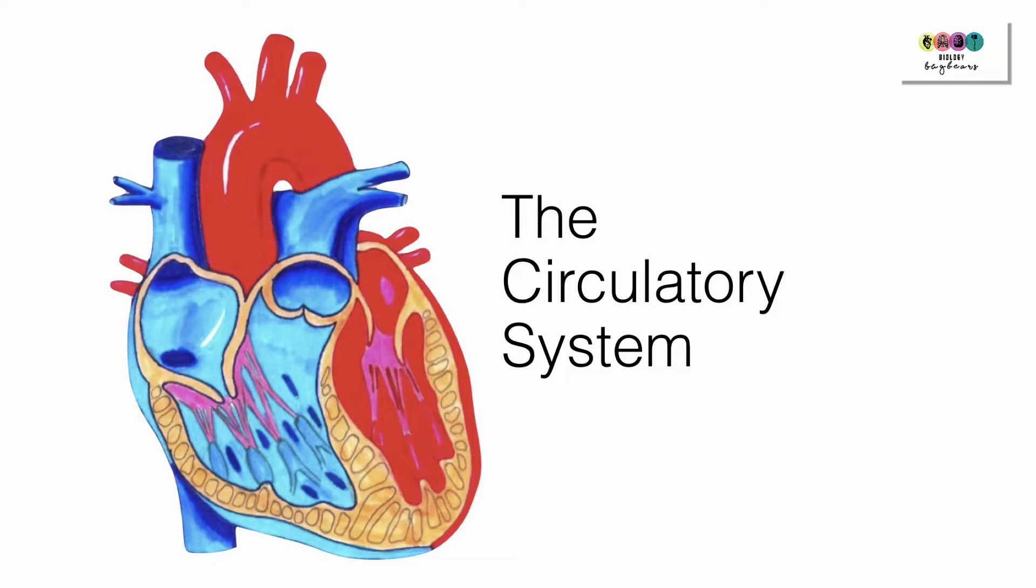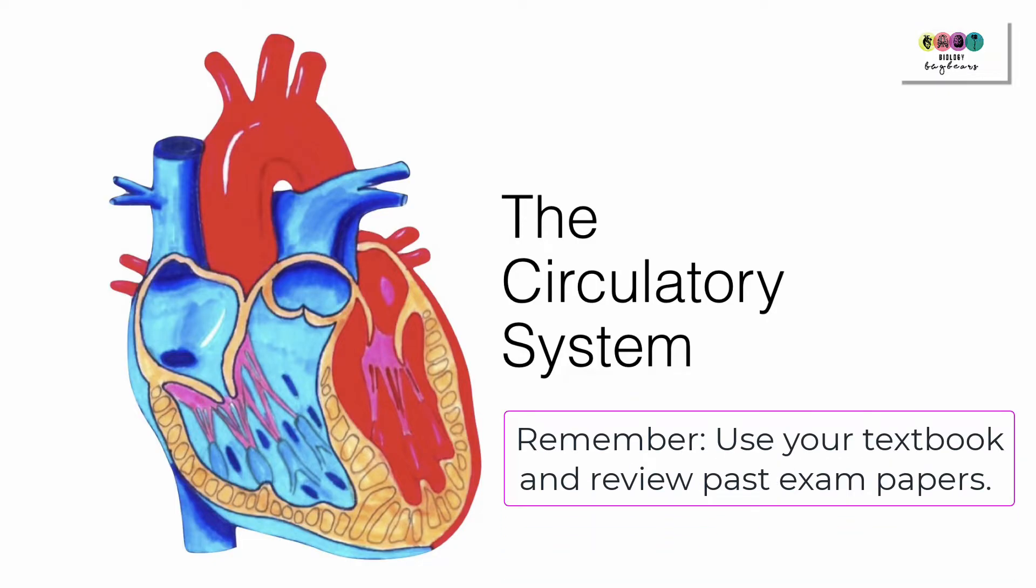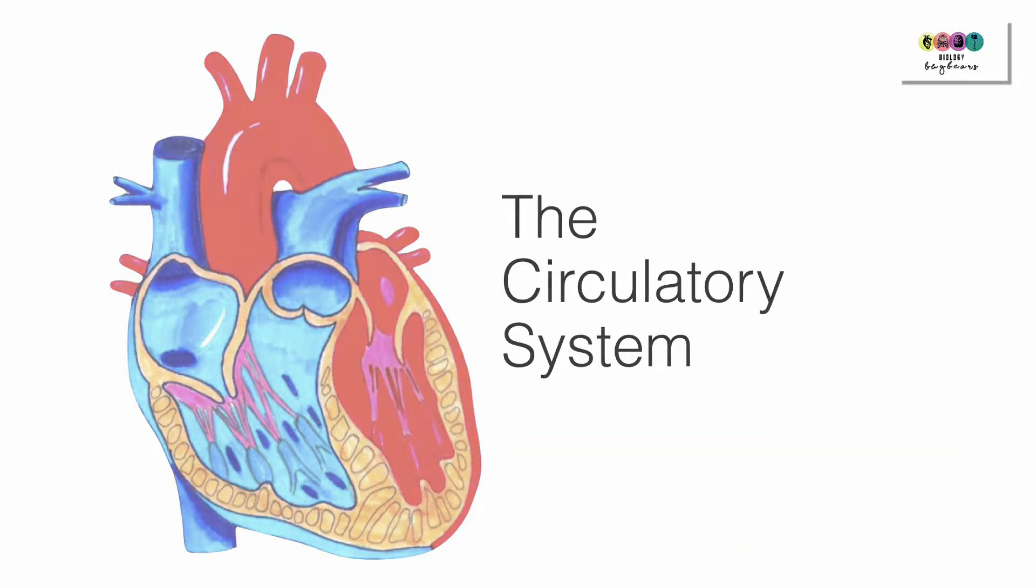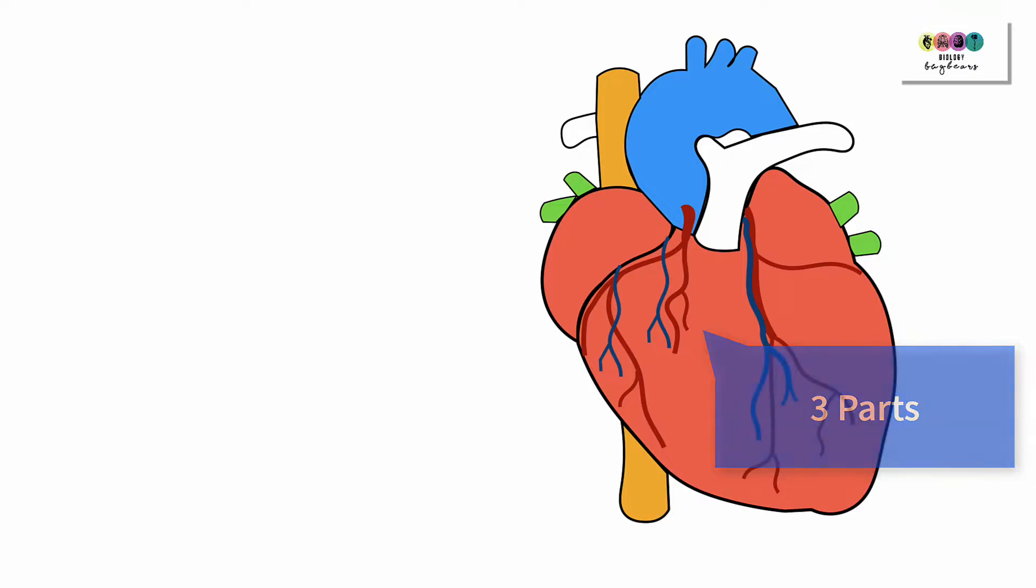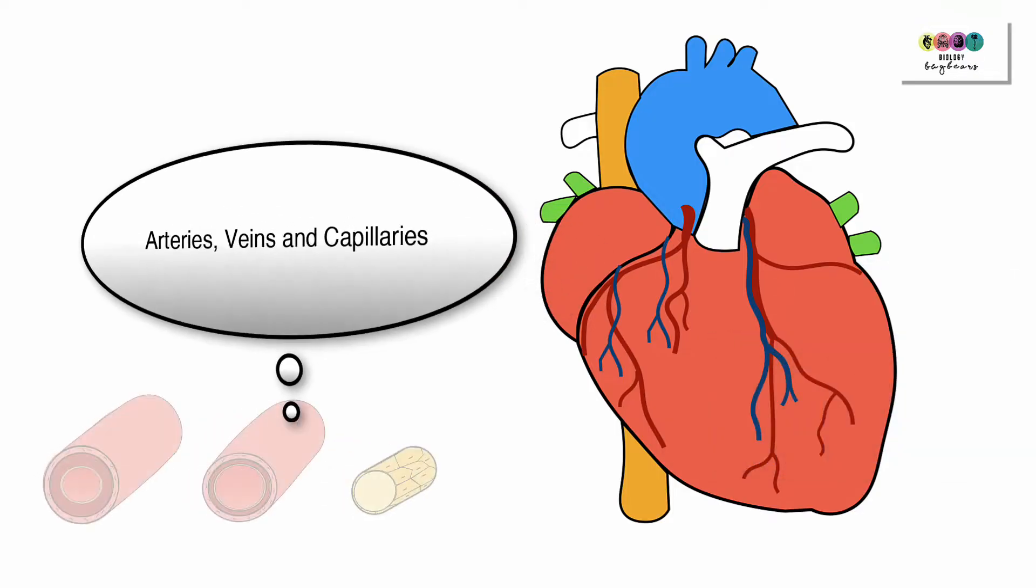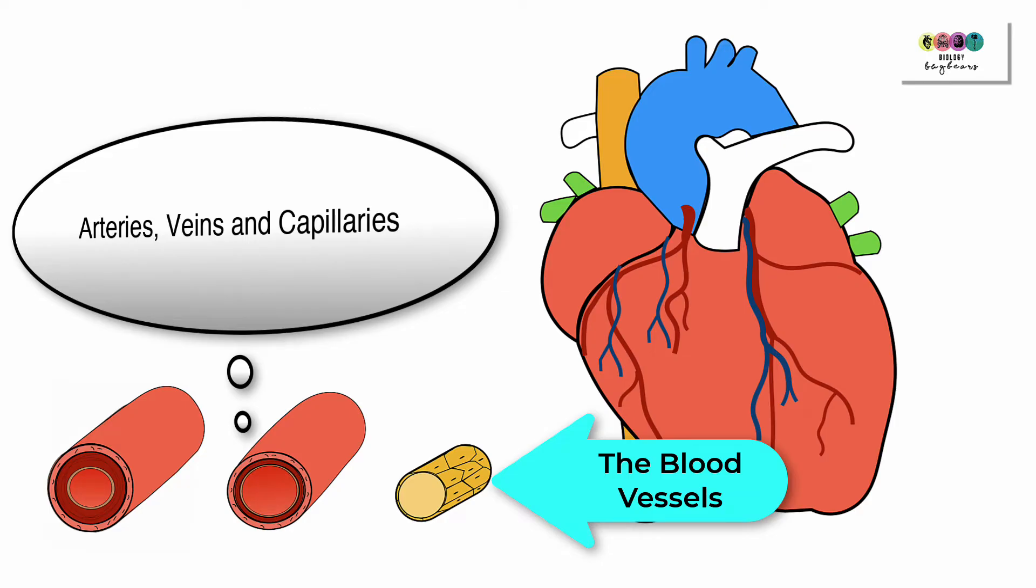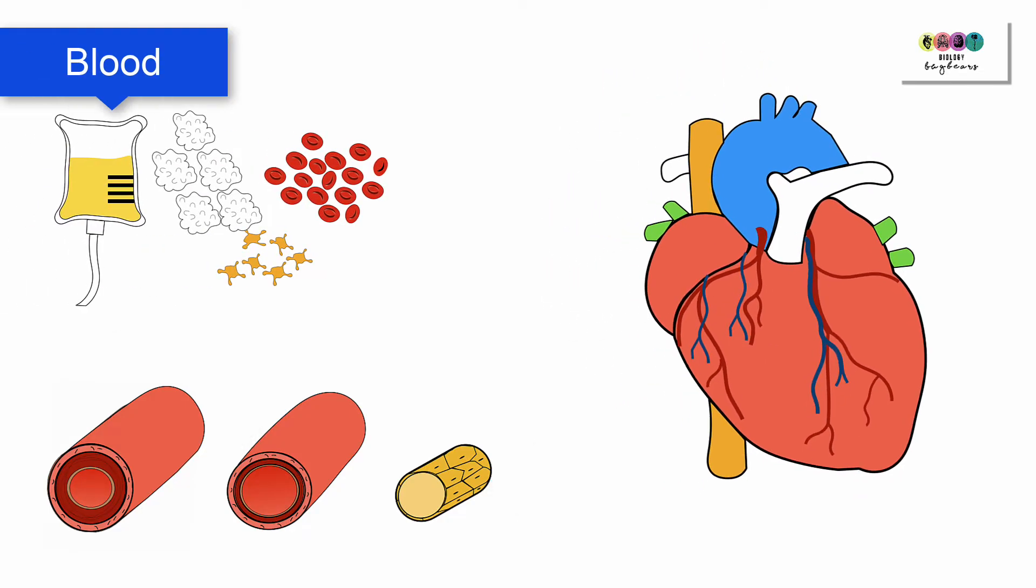This video is to help you revise the circulatory system and it's geared towards the Irish leaving cert course. The circulatory system is made up of three parts: the first of which is the heart which acts as the pump, and then there are the blood vessels—the tubes in which the blood flows: arteries, veins and capillaries.